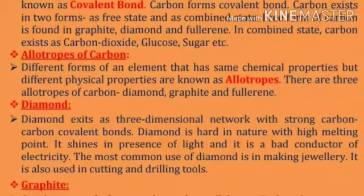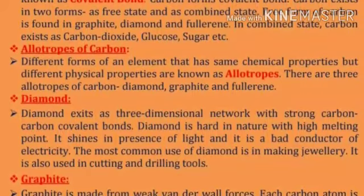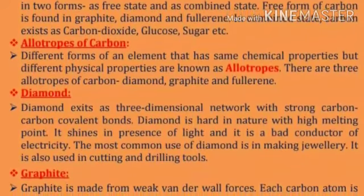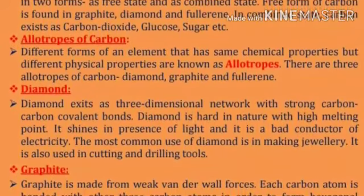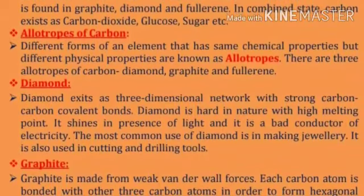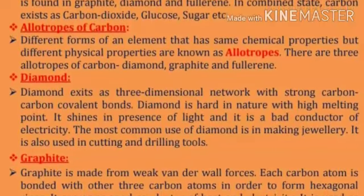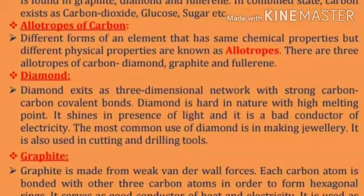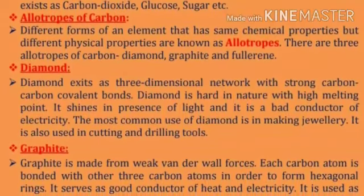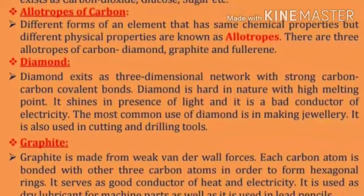Allotropes: Different forms of an element that have the same chemical properties but different physical properties are known as allotropes. There are three allotropes of carbon: diamond, graphite, and fullerene.